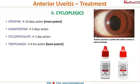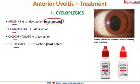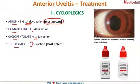The cycloplegics used in ophthalmology and uveitis are atropine, homatropine, cyclopentolate, and tropicamide. Atropine is the most potent, lasting 14 days; homatropine lasts 3 days; cyclopentolate lasts 1 day; and tropicamide is the weakest, lasting only 6 hours.